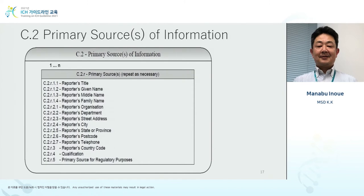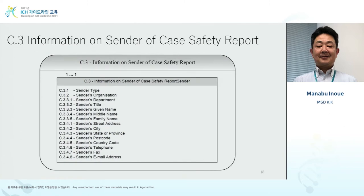Next, C2 — primary source. For an actual AE case, the reporter's information is given here: medical staff or customer information, along with other personal information. Depending on the regulation in different countries, the scope of personal information to be shared will be determined.